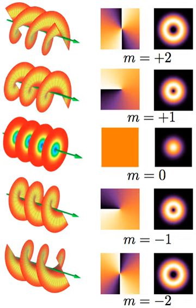m is also the so-called topological charge of the optical vortex. Light beams that are in a helical mode carry non-zero OAM.